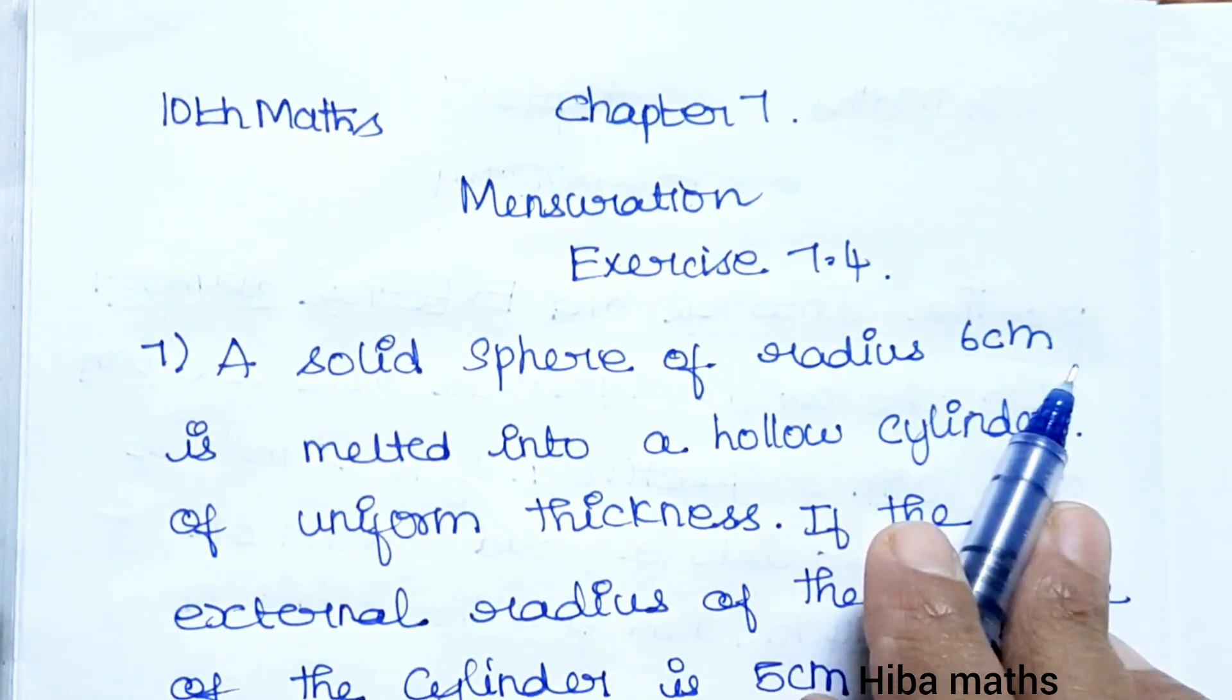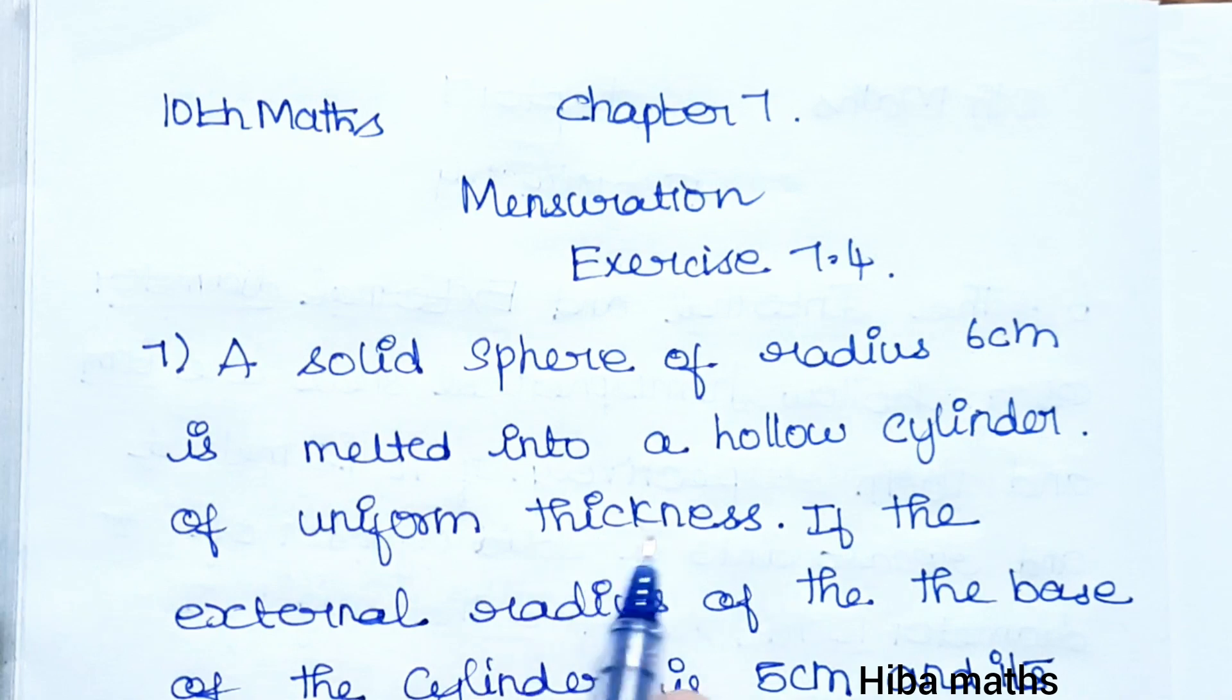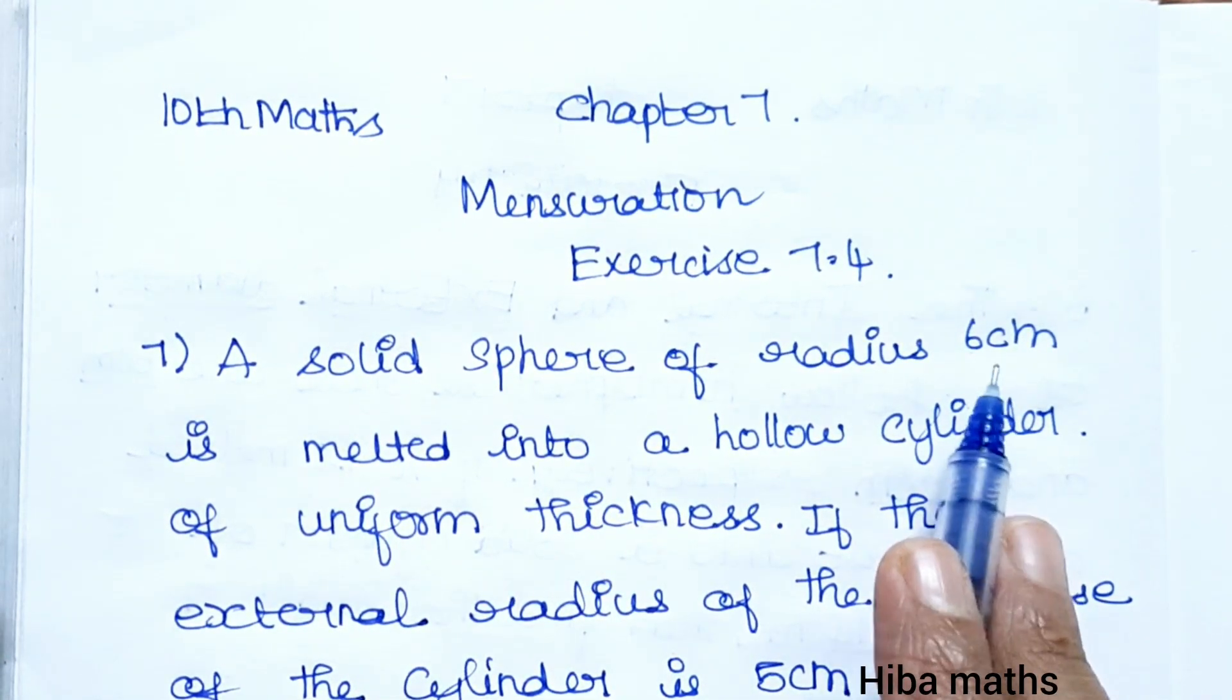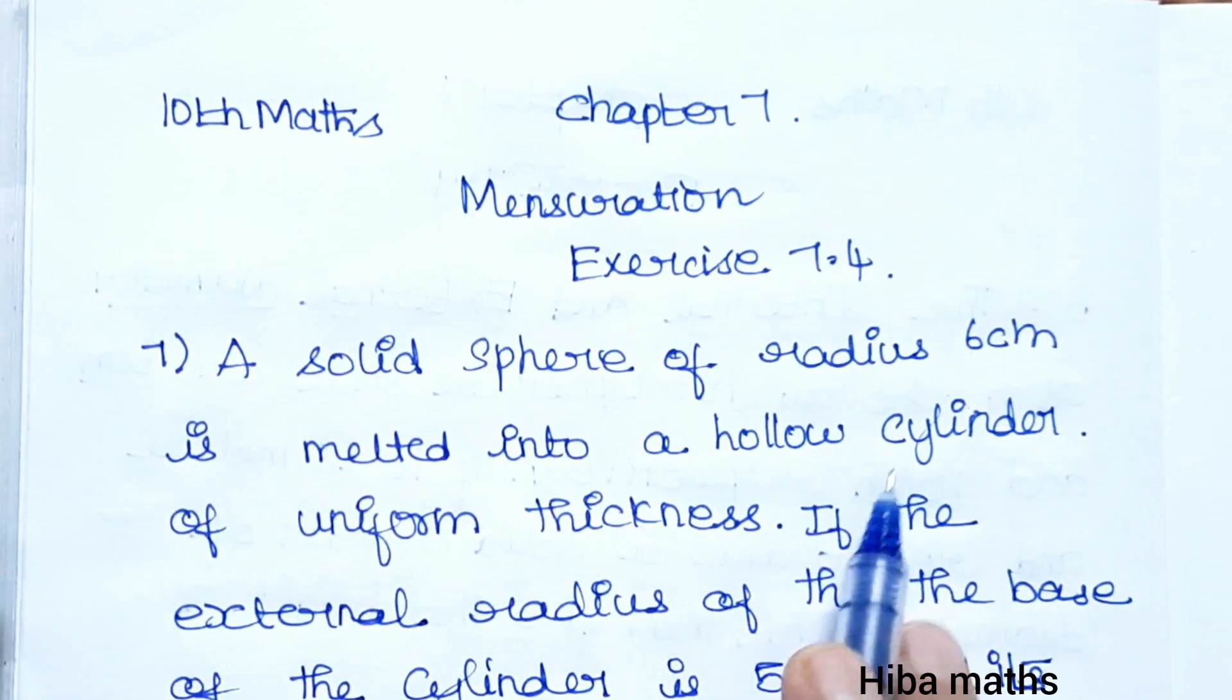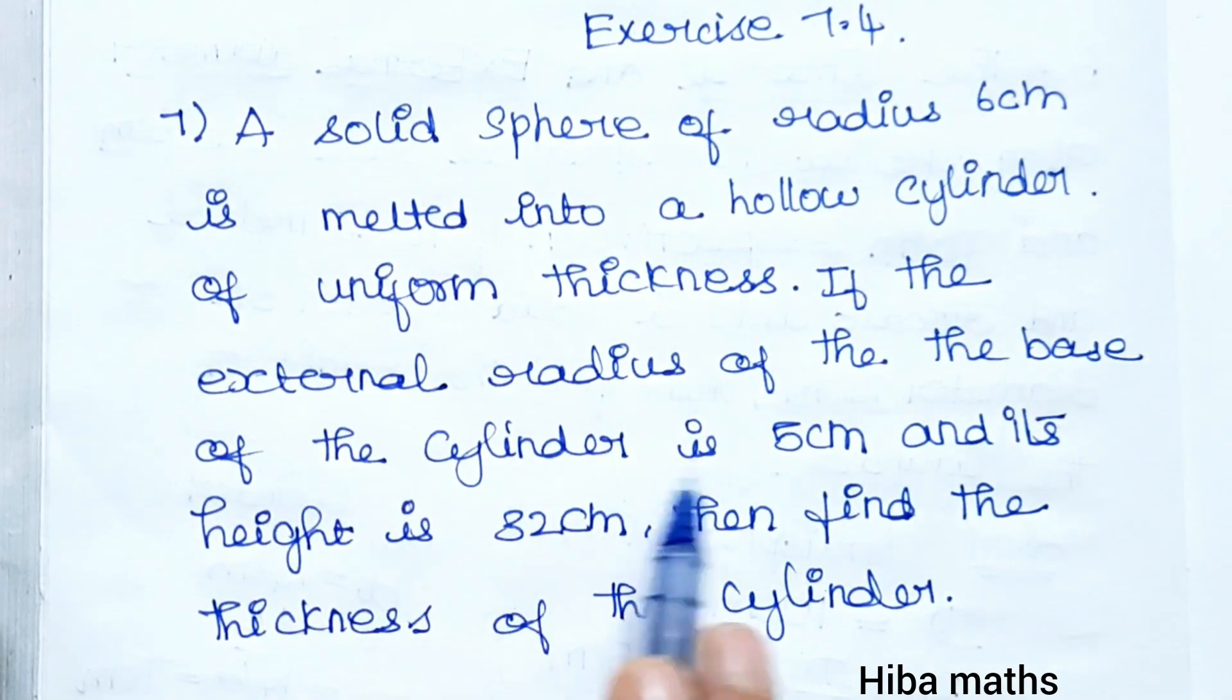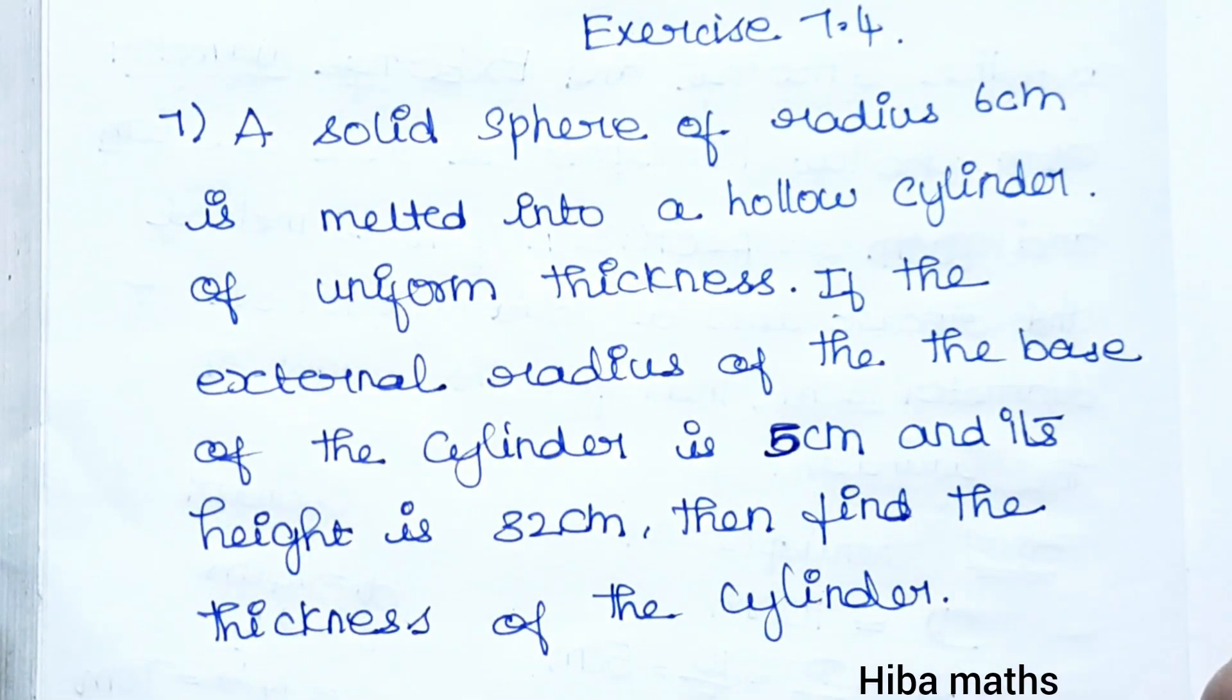A solid sphere of 6 centimeter radius is melted. If the external radius of the base of the cylinder is 5 centimeters, the hollow cylinder has external radius and internal radius.